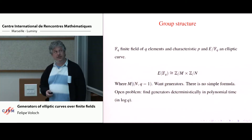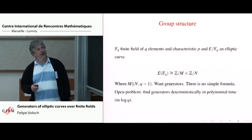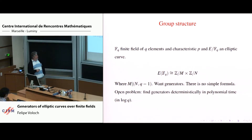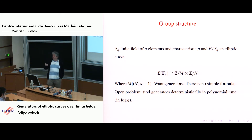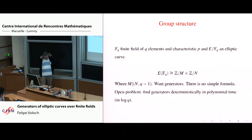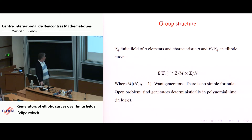We're interested in the structure of this group when you have an elliptic curve defined over a finite field. You get a finite abelian group — the group of rational points of the elliptic curve over this finite field. It's known that there are at most two generators, so the group has order M times N, and can always be written in that form.